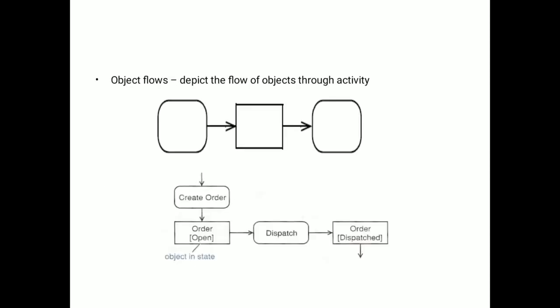Object flow. Here you can see the object flow from one object to another. Create order, object in state, that is the order open, dispatch order, order dispatched. Using this object flow in the activity diagram can be shown.